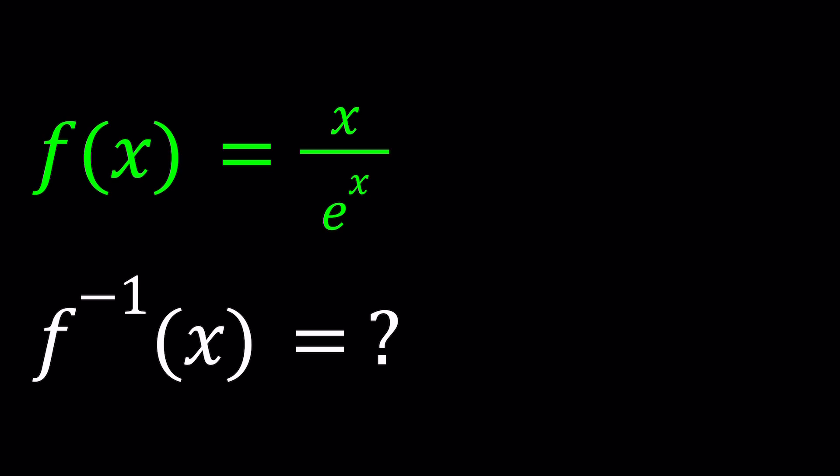So basically what f inverse does is just reverse the process. Think of a function that maps an x value to a y value. So if this is f, then f inverse will take the y and map it back to x. That's what it does.